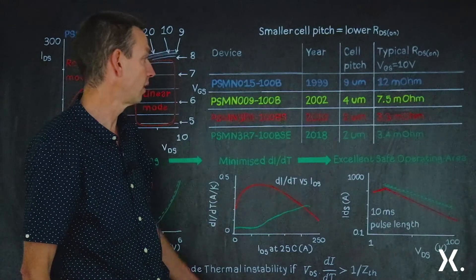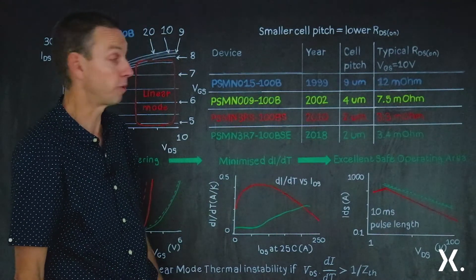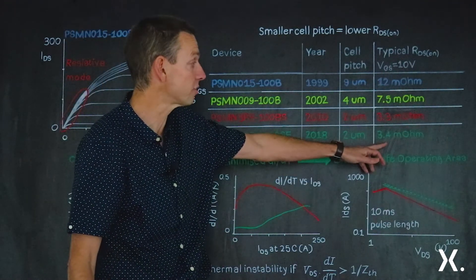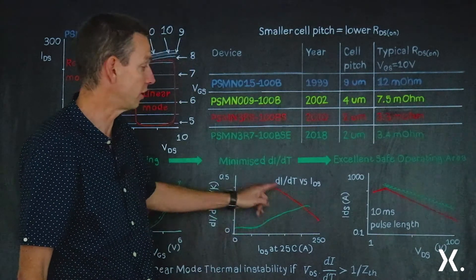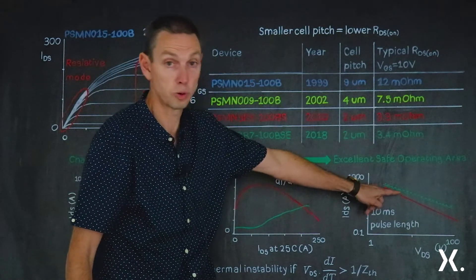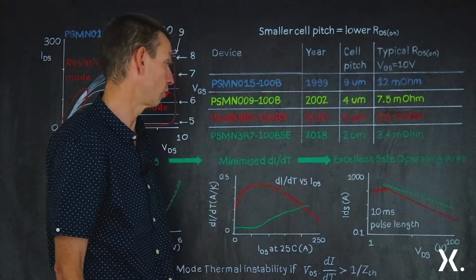So it is possible now to have a device which has effectively the best of both worlds. We've got a device with a very low resistance, which is what you want for resistive mode switching, but also by clever channel engineering, reducing the DI-body-T, you can get the benefit of having a wide safe operating area.